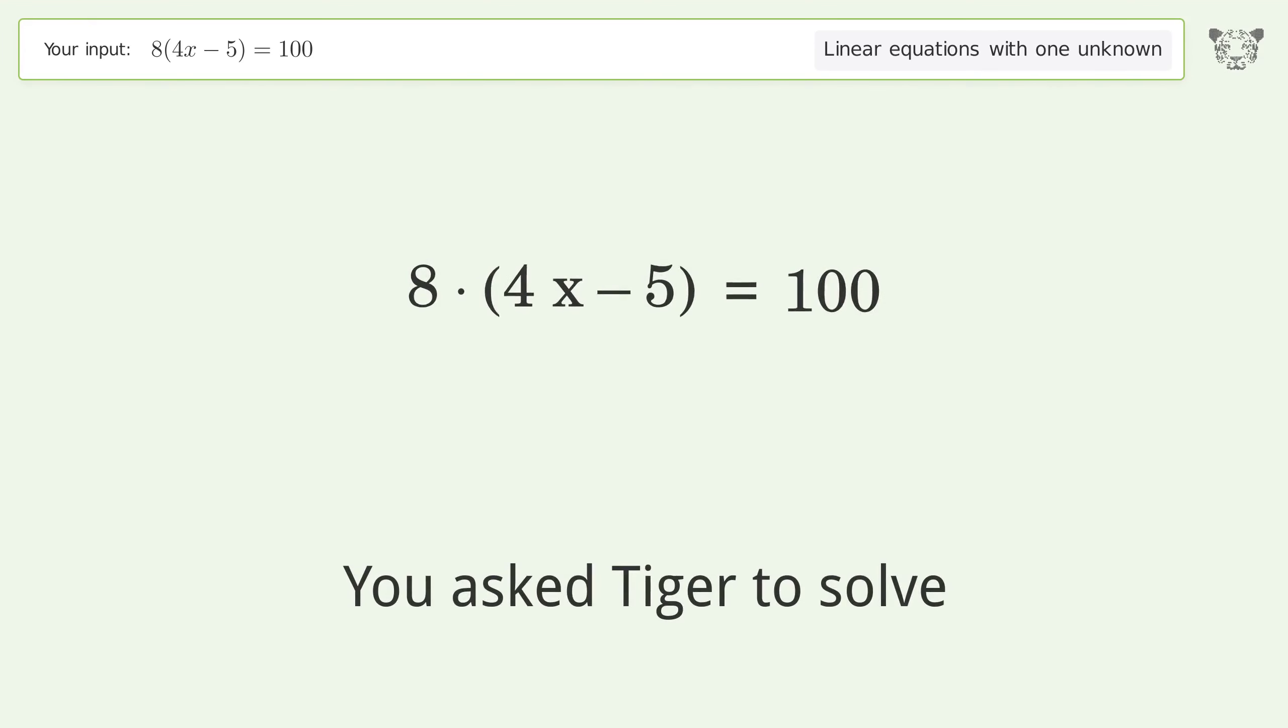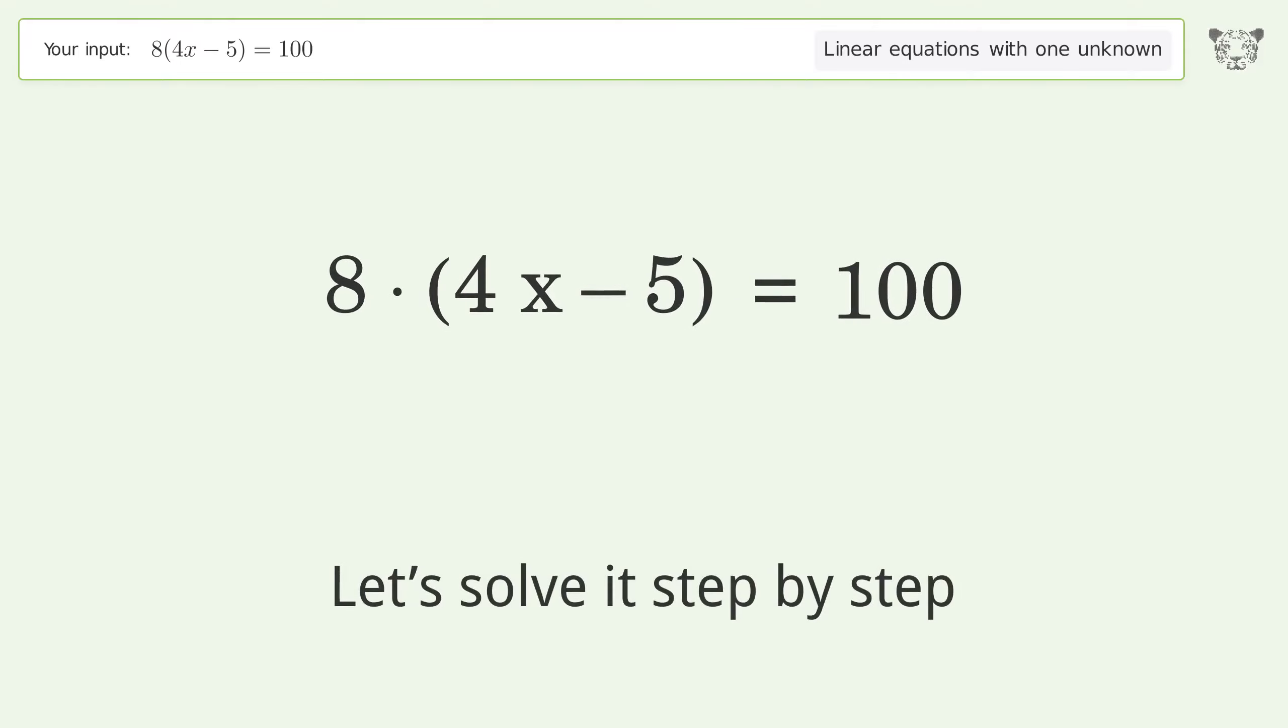You ask Tiger to solve this. It deals with linear equations with one unknown. The final result is x equals 35 over 8. Let's solve it step by step. Simplify the expression, expand the parentheses.